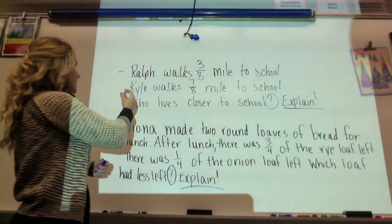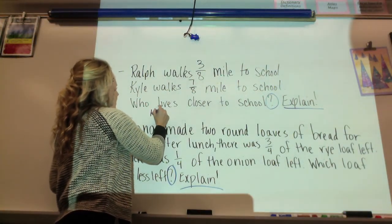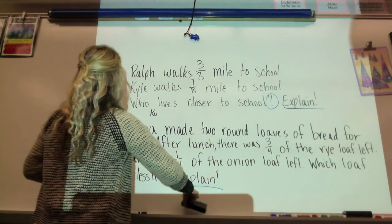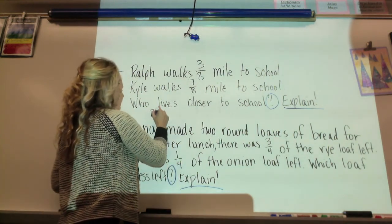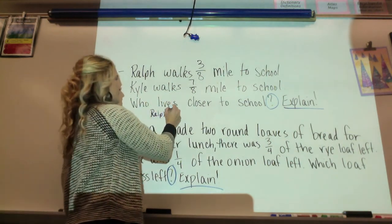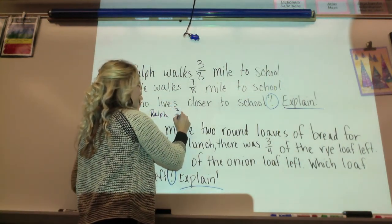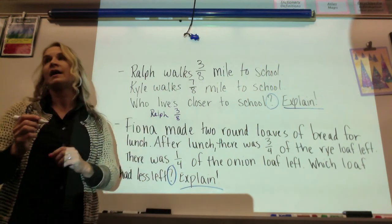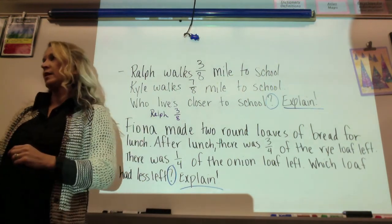The explanation that she gave was that Ralph lives closer because he only has three-eighths of a mile to walk to school and Kyle has seven-eighths of a mile to walk to school.